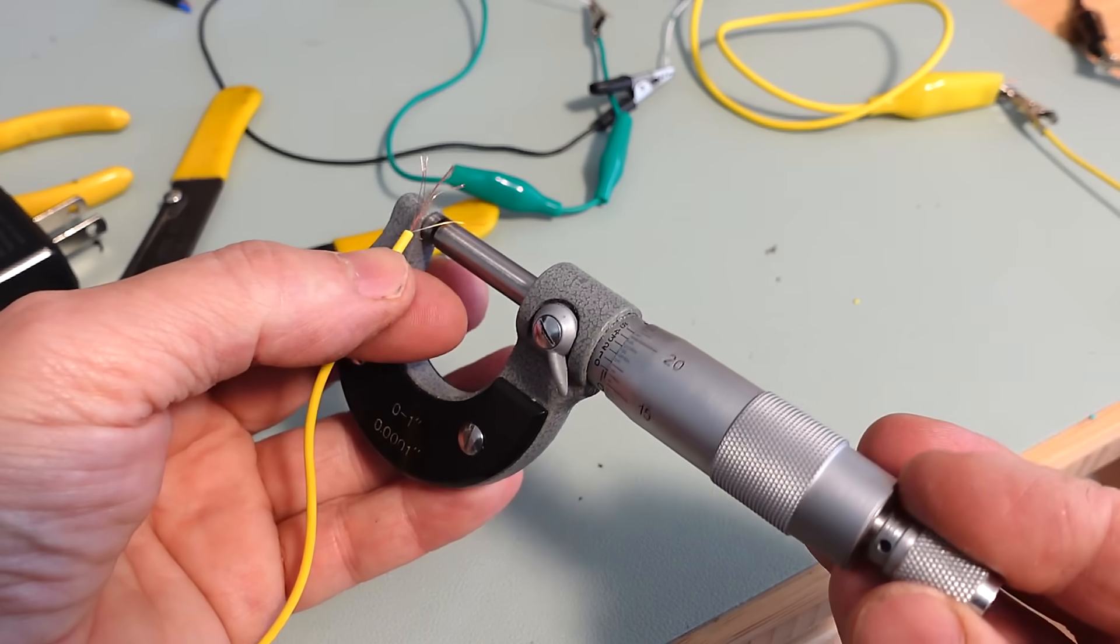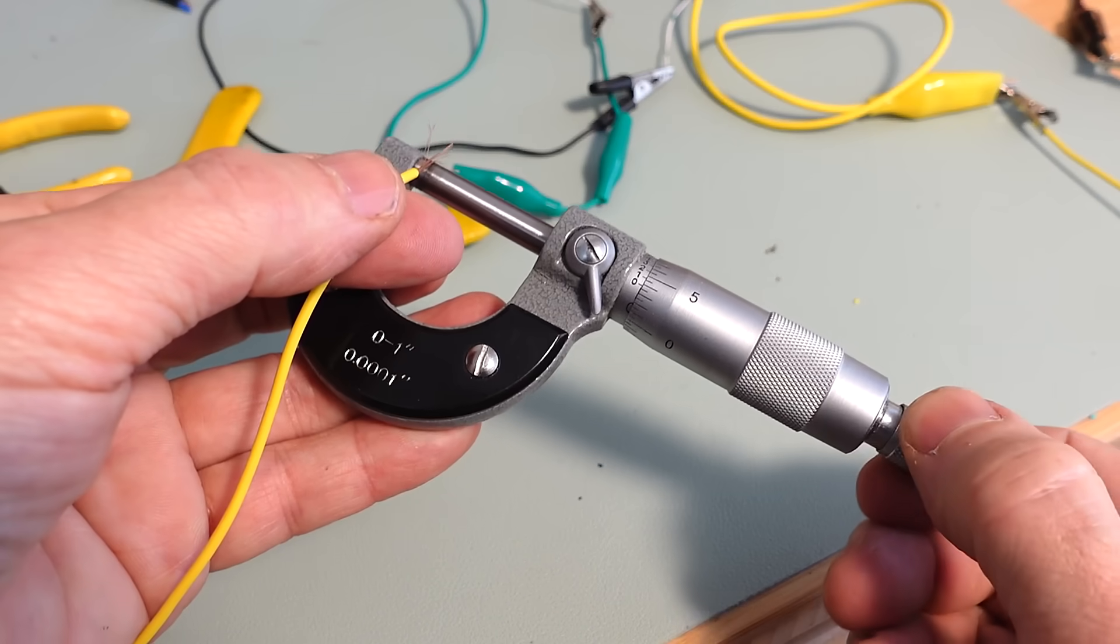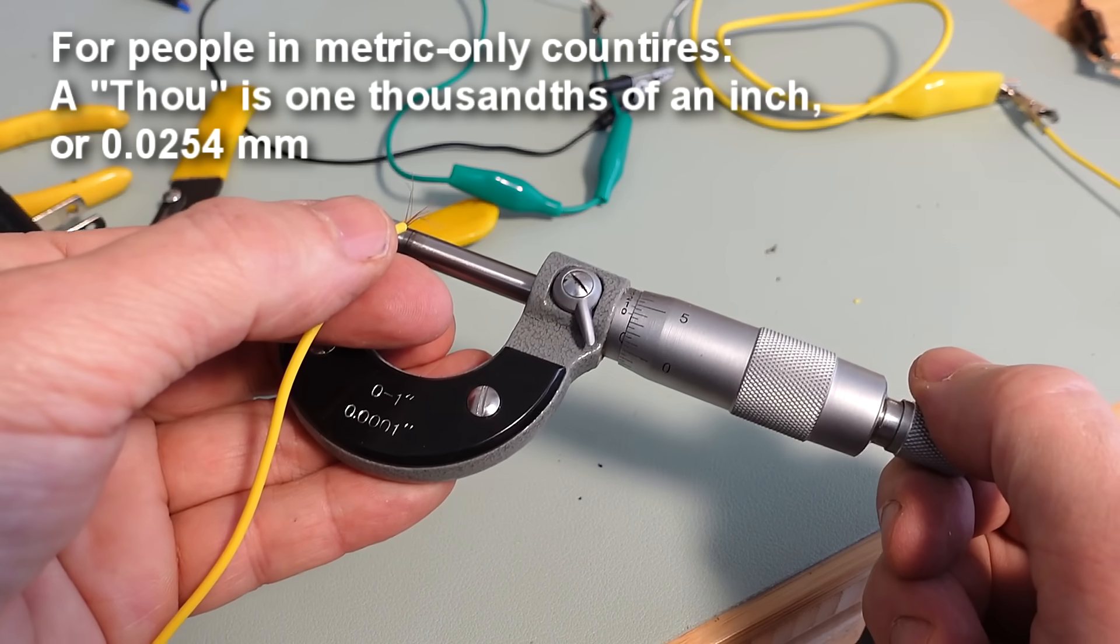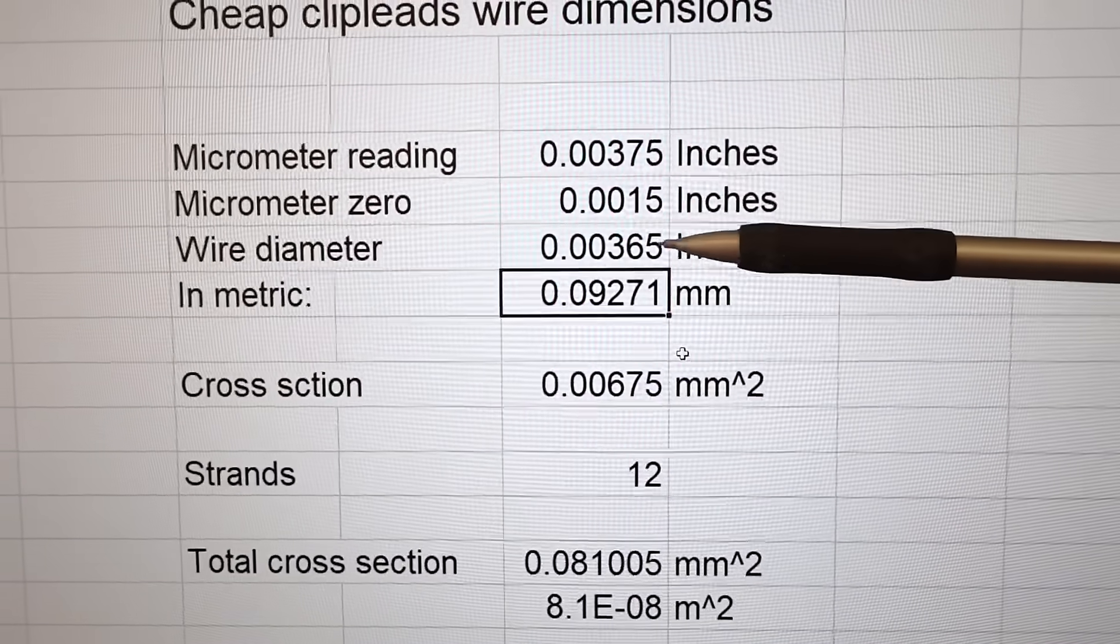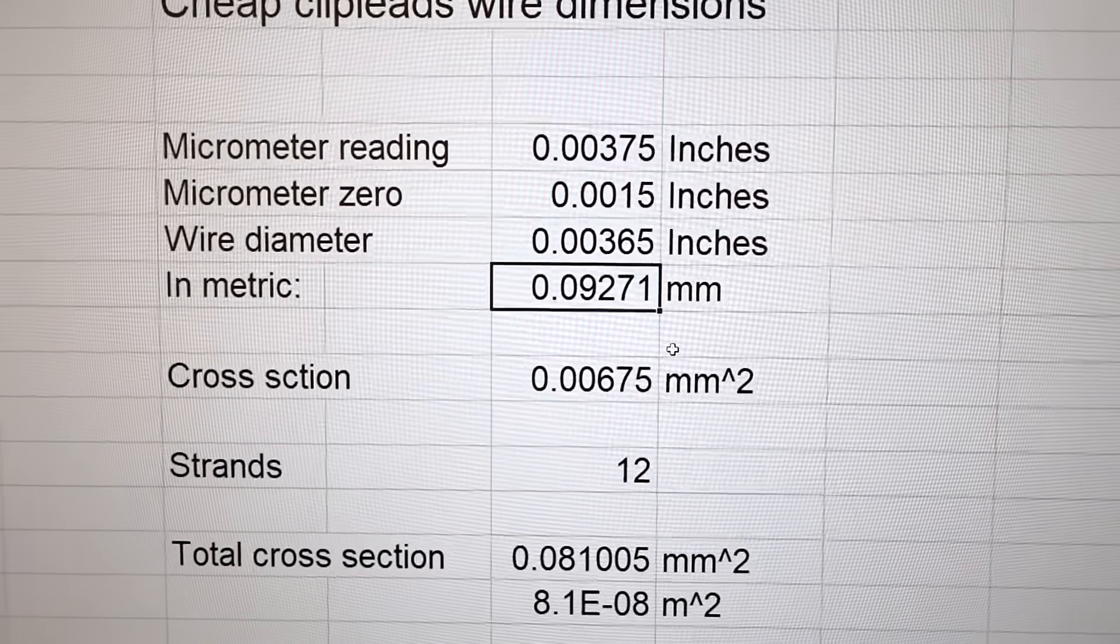And, checking it with the micrometer. That reads 3.75 thou. So, that's what I read. My cover doesn't quite go to 0. So, I subtracted that. And, that's this much. Or, 0.09271 millimeters.